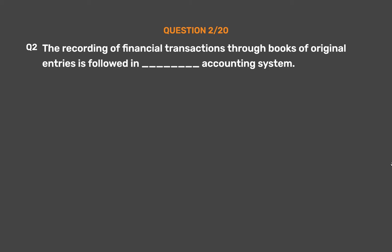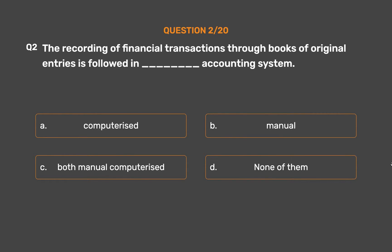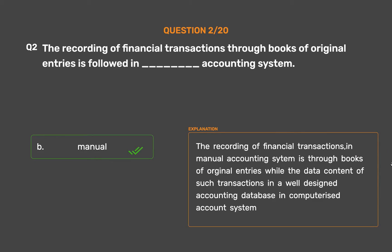Question number 2. The recording of financial transactions through books of original entries is followed in underscore accounting system. Option A: Computerized. Option B: Manual. Option C: Both manual and computerized. Option D: None of them. The correct answer is Option B — Manual. The recording of financial transactions in a manual accounting system is through books of original entries, while the data content of such transactions is stored in a well-designed accounting database in a computerized accounting system.